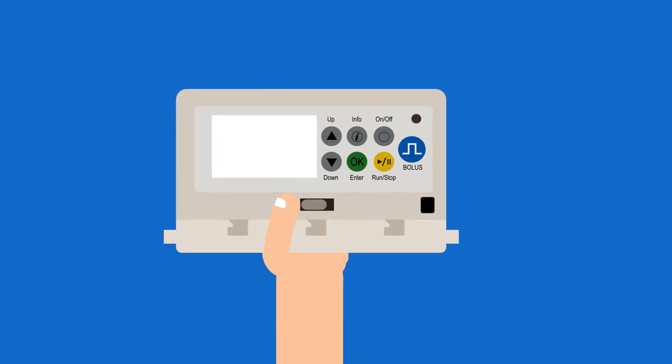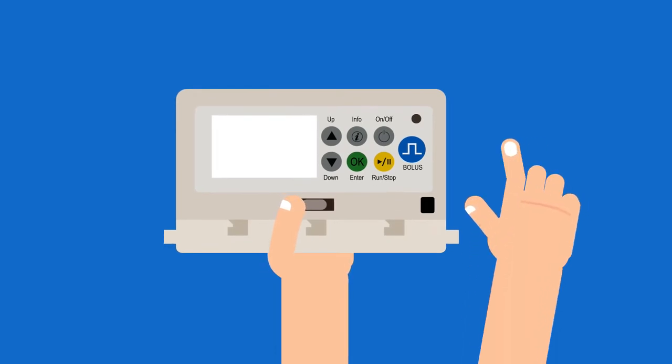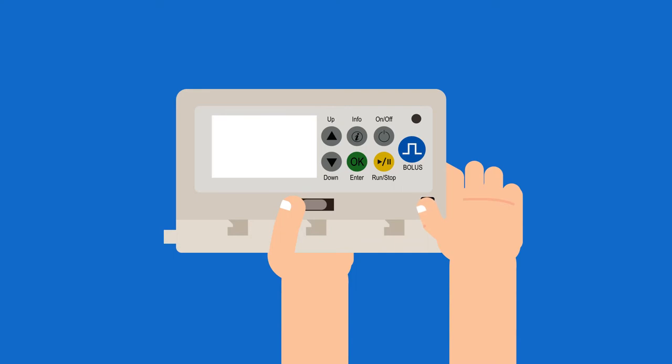Step 2: Detach the tubing from the pump. This is a two-handed motion. Use one hand to press and hold the black button at the bottom right corner of the pump while using the other hand to slide the metal bar towards the black button at the same time. This will disengage the tubing from the pump.